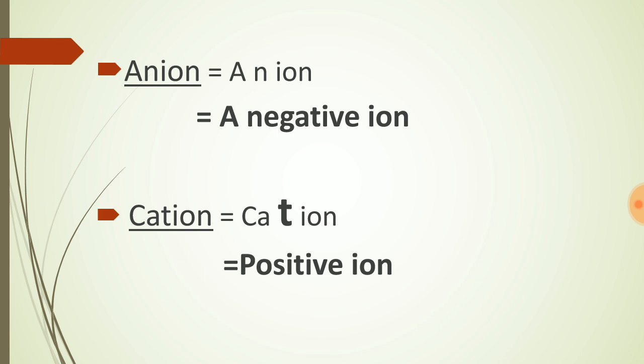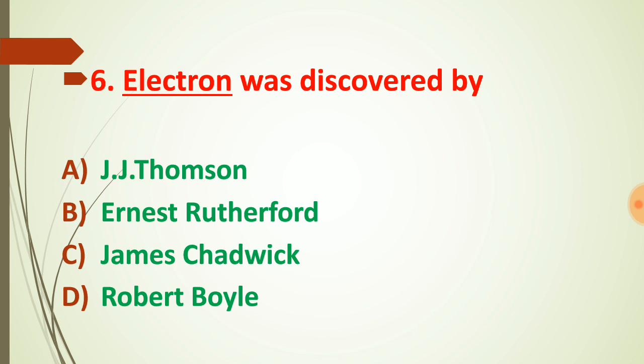Here is a memory aid: if we divide the word 'anion' into parts — 'an' means negative, so negative ions are called anions. For 'cation,' the letter 'T' can be taken as a positive, so positive ions are called cations. Anions move towards the positive plate called the anode, and cations move towards the negative plate called the cathode.